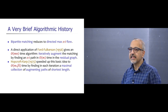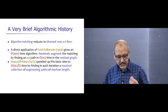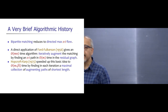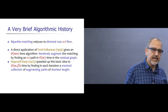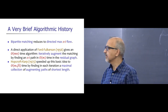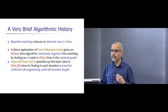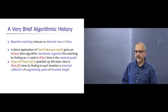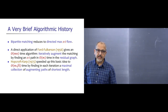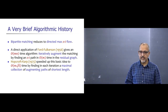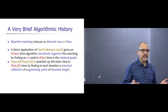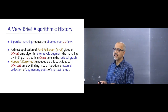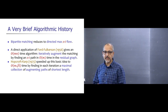This basic idea was speeded up by Hopcroft and Karp. Instead of finding a single augmenting path, in each iteration they find a maximal collection of vertex-disjoint augmenting paths of shortest possible length. They showed that the shortest augmenting path length would go up by at least two, cutting the total number of phases from n down to √n. This immediately gives an O(m√n) time algorithm.